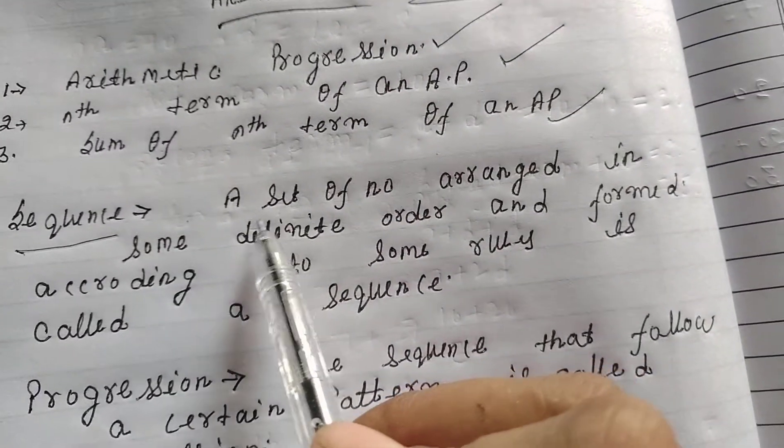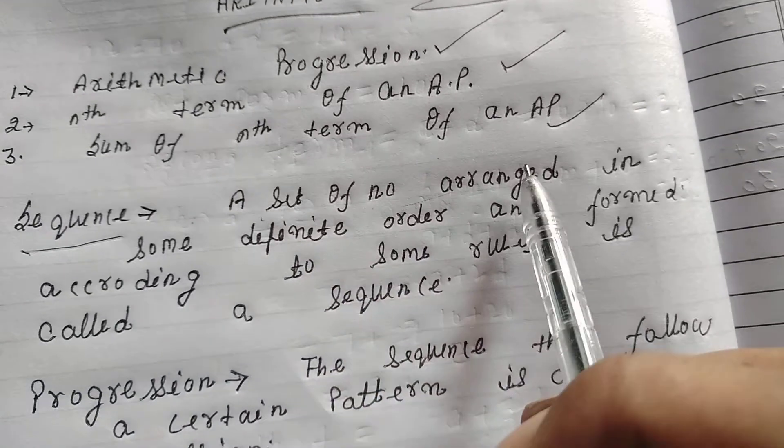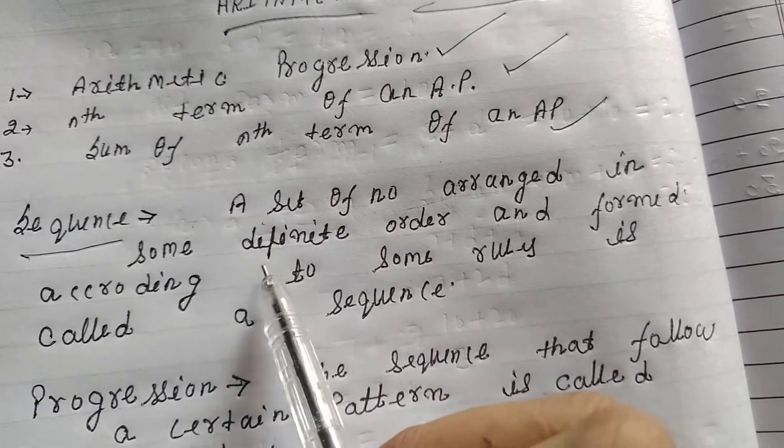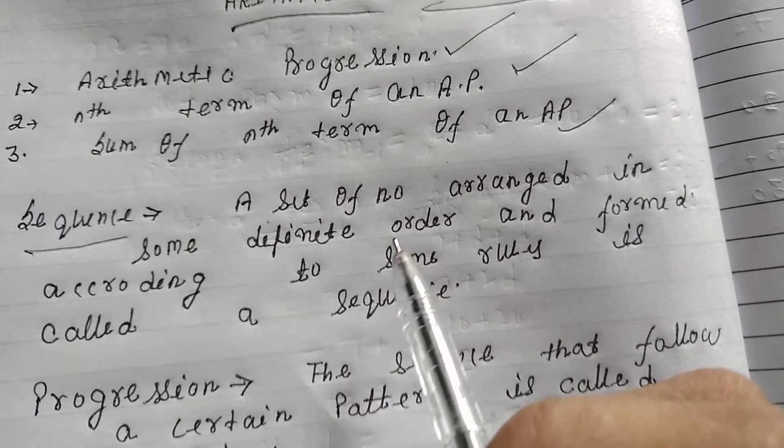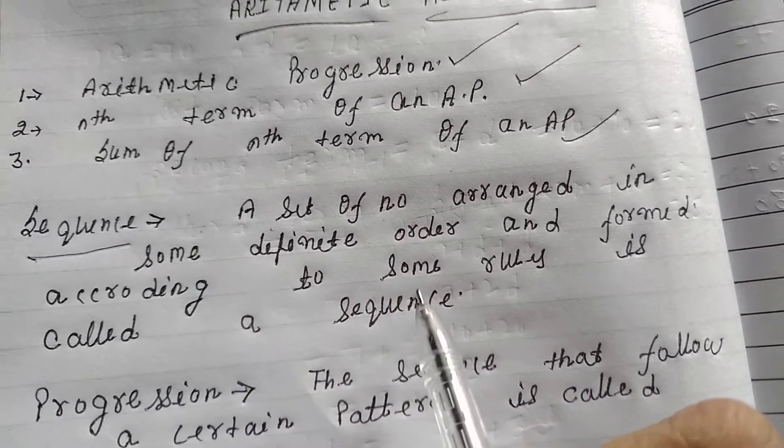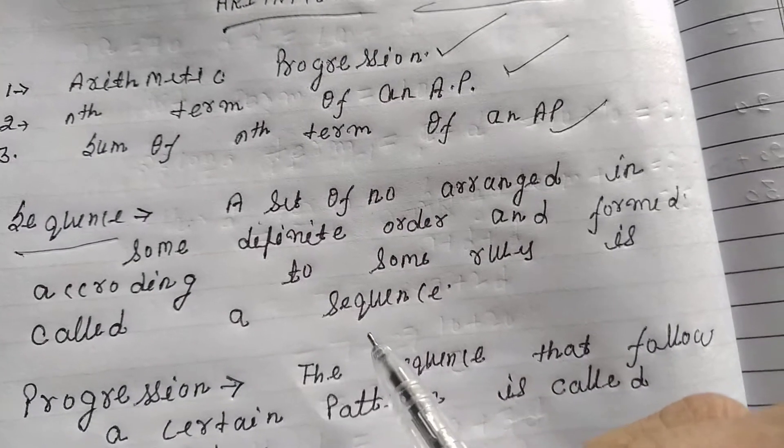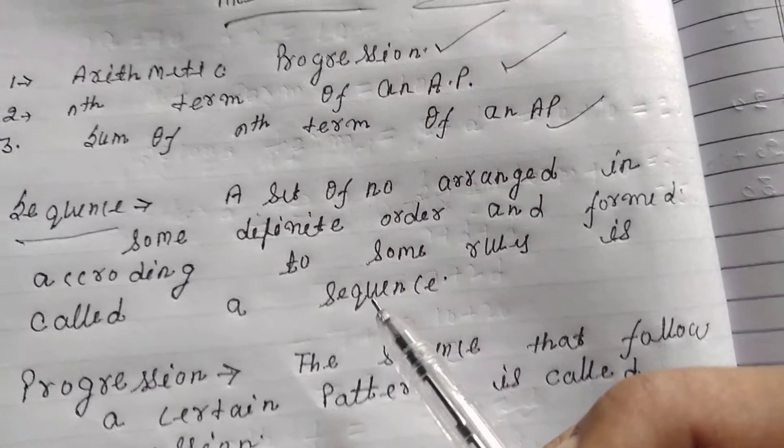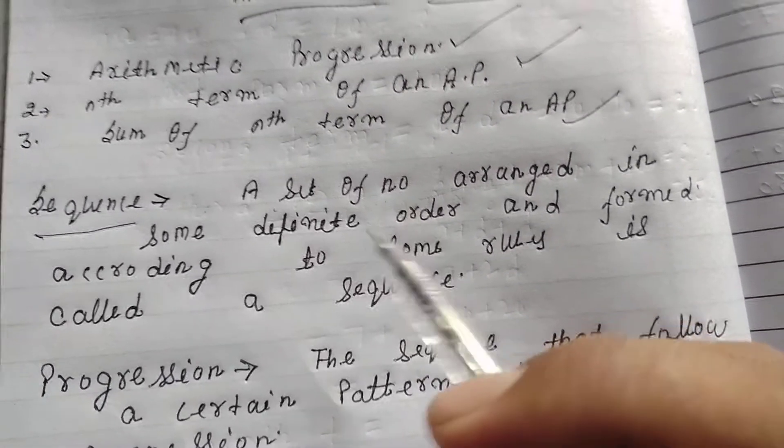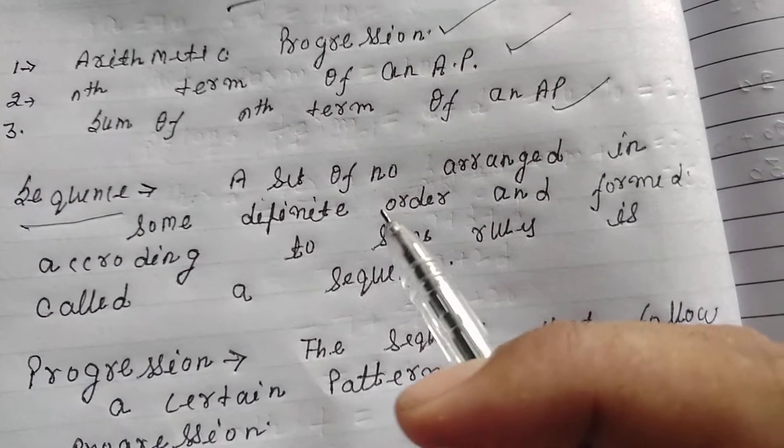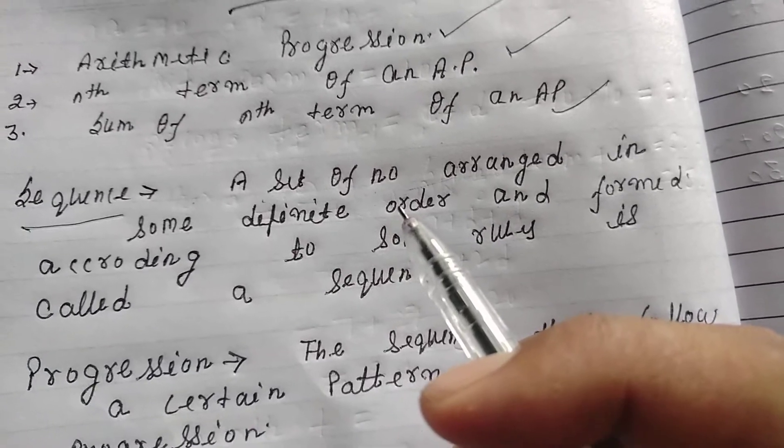First we need to know what is a sequence. A sequence is a set of numbers arranged in some definite order and formed according to some rules. As we know from previous classes, we know the pattern, just like 2, 4, 6, what is next? Next is 8. Same is sequence.